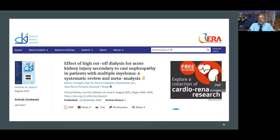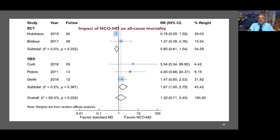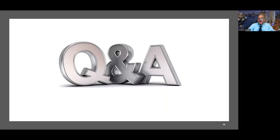High cut-off dialysis use is declining, and its requirement is decreasing. There is significant albumin loss, especially in patients with myeloma. However, the impact of high cut-off hemodialysis on all-cause mortality is only borderline, so for myeloma patients we can go directly to medium cut-off or high-permeability hemodiafiltration technique. In conclusion, dialysis membrane development over the last decade is moving toward more porous membranes that permit better qualification and quantification of larger uremic toxin removal, using more permeable and larger dialyzer surface areas in hemodiafiltration techniques. Thank you very much.